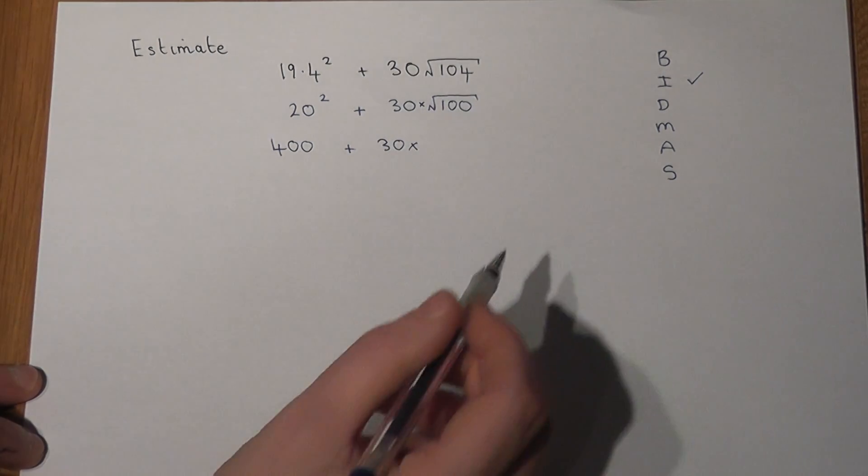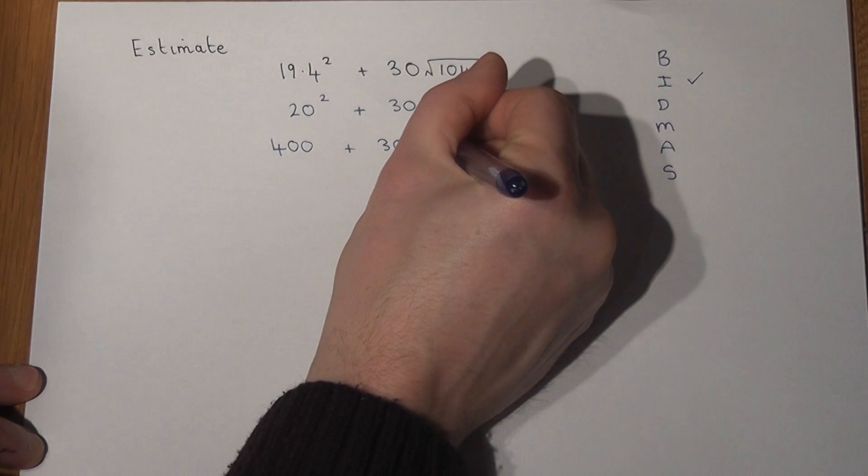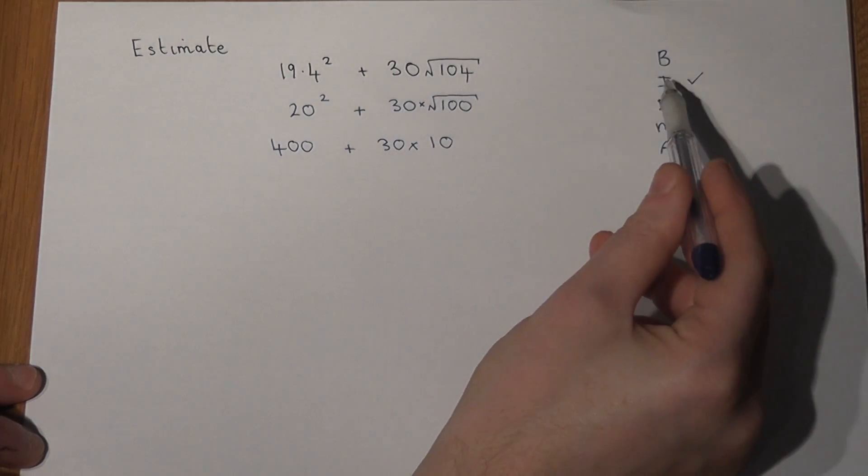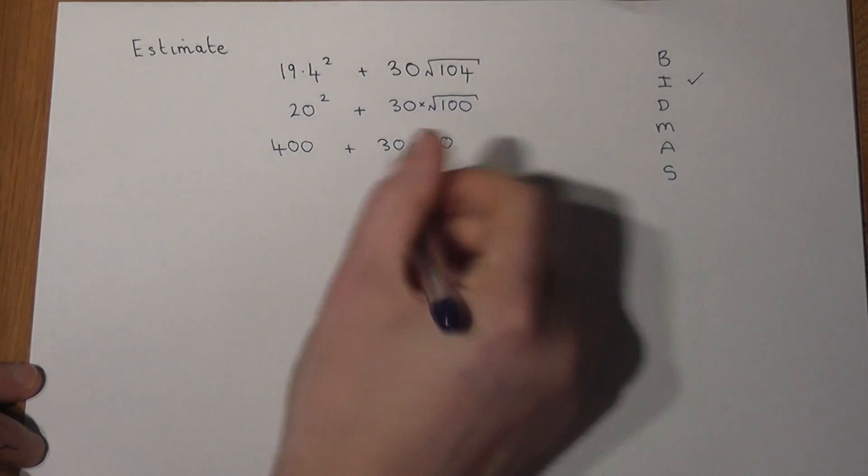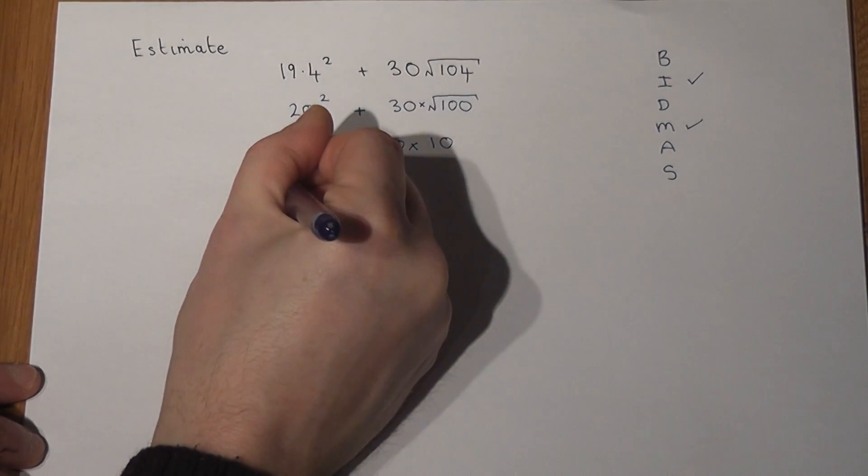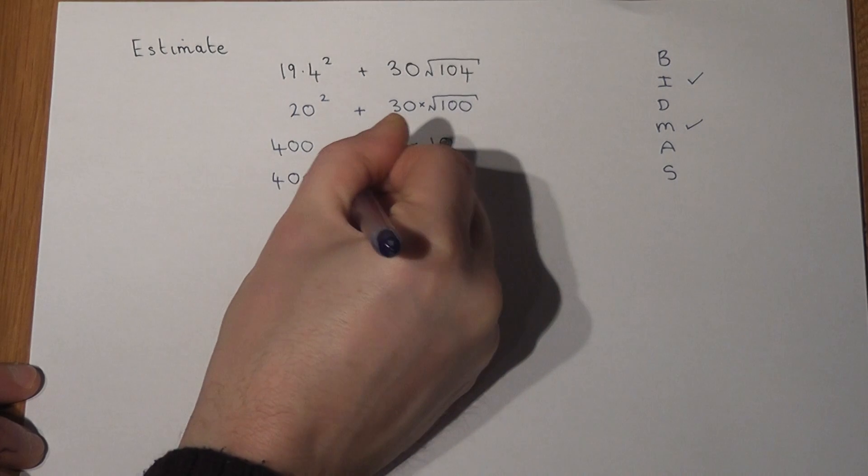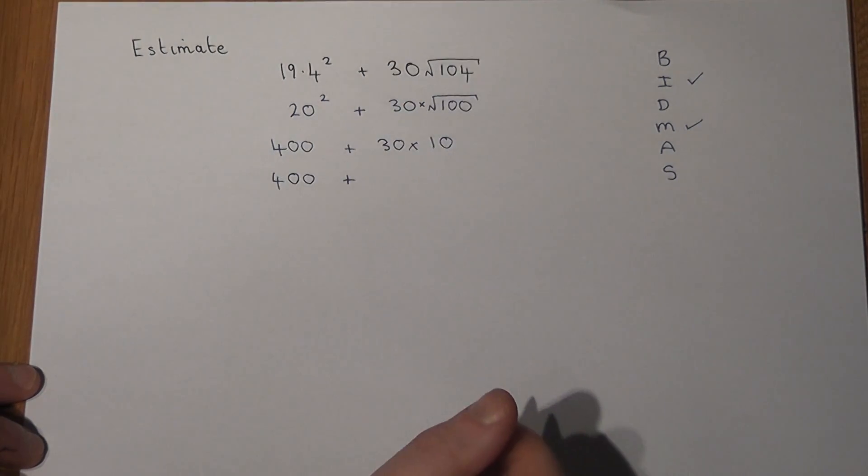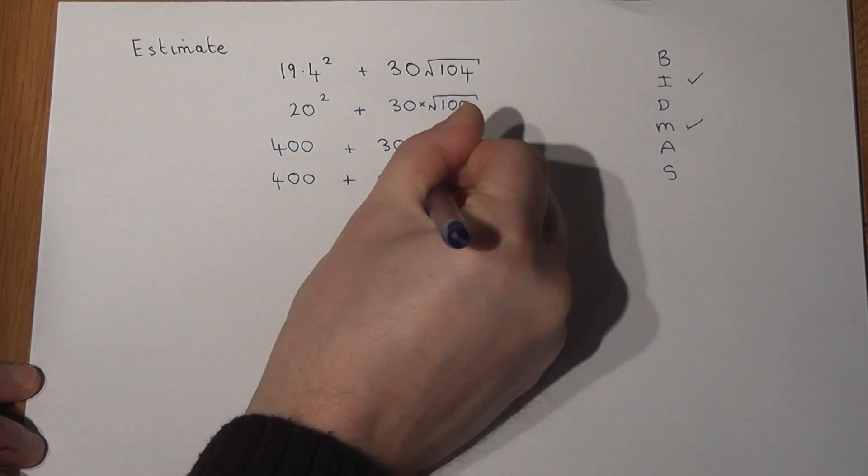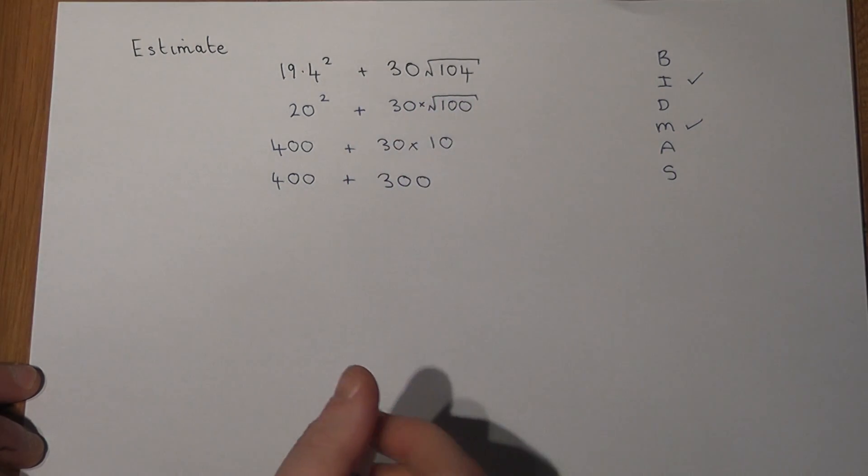Now next step, we've done the powers, there's no division, so the next step is to do the multiplication. We don't add straight away. I'm going to work out what 30 times 10 is. Well 30 times 10 just equals 300, and I'm then left with one addition which will be the last on my list of things to do.